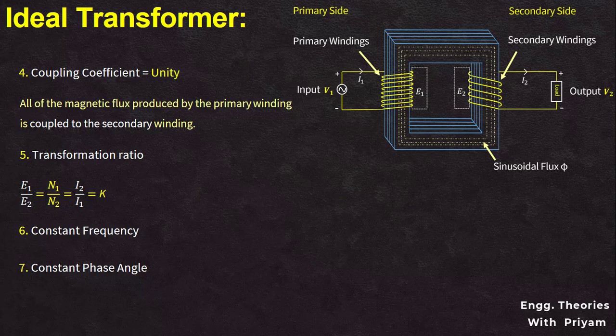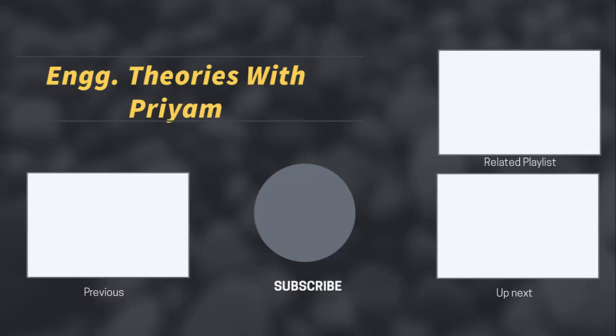The last important characteristic of the ideal transformer is no noise — an ideal transformer does not produce any noise. These are some of the important characteristics of an ideal transformer. In the next lecture, we will see the phasor diagram of an ideal transformer at no-load condition. If you have any questions regarding this presentation, feel free to post them in the comment section, and don't forget to hit the subscribe button.